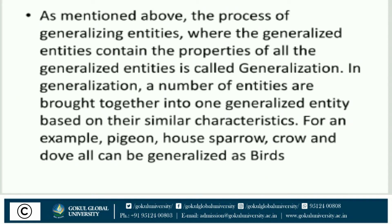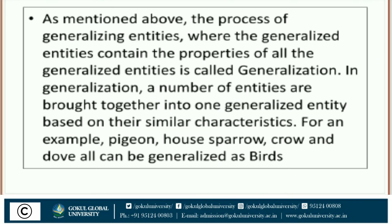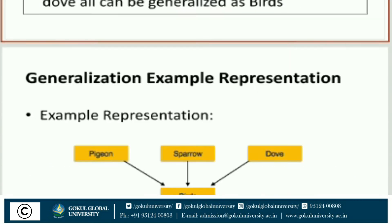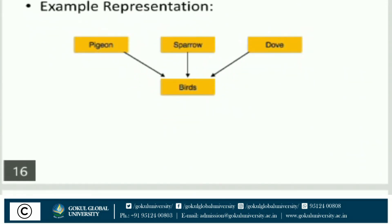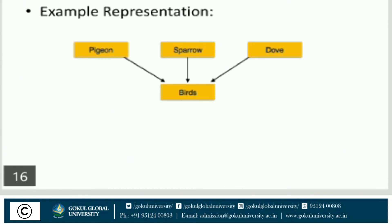In generalization, a number of entities are brought together into one generalized entity based on their similar characteristics. For example, pigeon, house sparrow, crow, and dove can all be generalized as birds. Similarly, dog, donkey, and monkey are generalized as animals. The generalization representation with birds includes pigeon, sparrow, dove, etc.